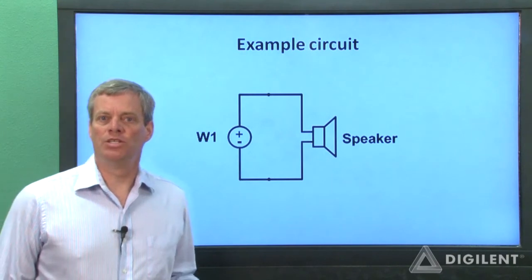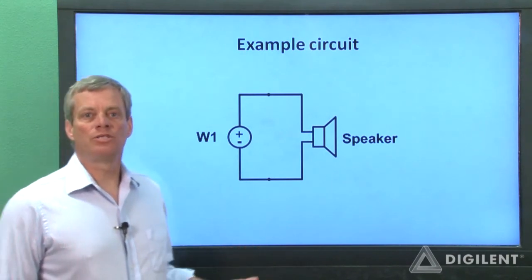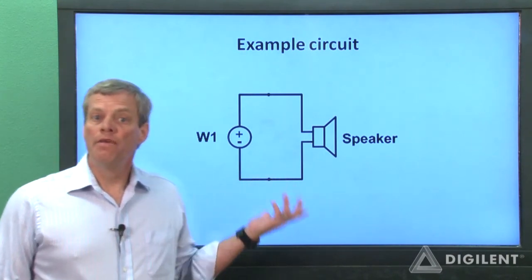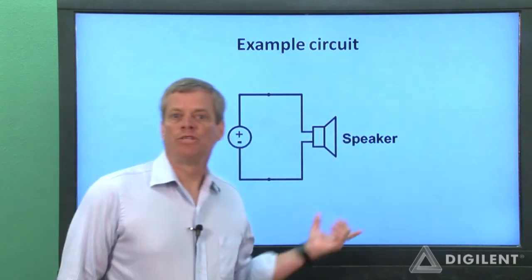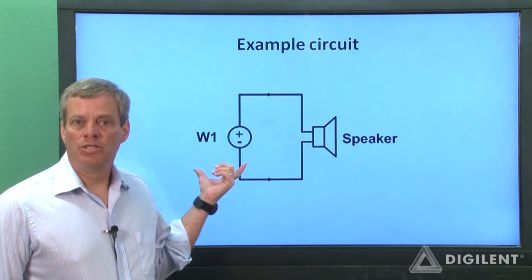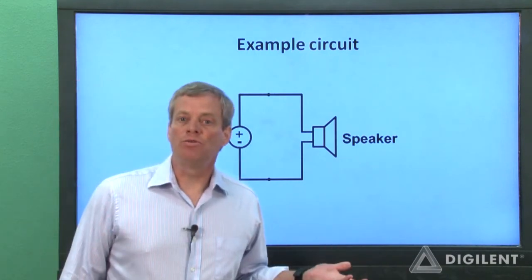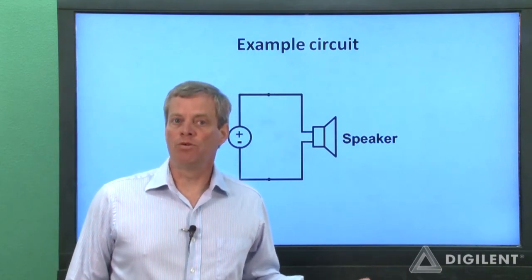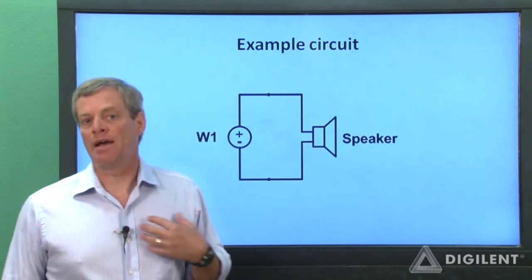As with the last few AWG projects, we're creating an audio signal that we want to listen to. Therefore, the circuit we'll use is the same one we used previously. It's simply a speaker connected to channel one of the AWG. Again, I'll be using a set of speakers connected to the headphone jack on the analog discovery to play back my signals.